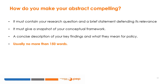Evans starts from the viewpoint that readers go to the abstract to decide whether your paper is worth reading, even though most journals only allow authors four to seven sentences to state their full abstract. The challenge is to be concise yet informative. To make your abstract compelling, it must contain your research question and a brief statement defending its relevance. It must give a snapshot of your conceptual framework, and it should contain a concise description of your key findings and what they mean for policies.